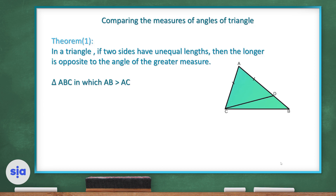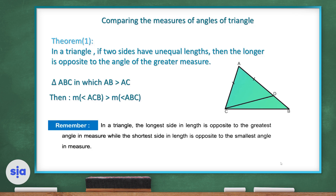...then the measure of angle ACB is greater than the measure of angle ABC. Let's remember that in a triangle, the longest side in length is opposite to the greatest angle in measure, while the shortest side in length is opposite to the smallest angle in measure.